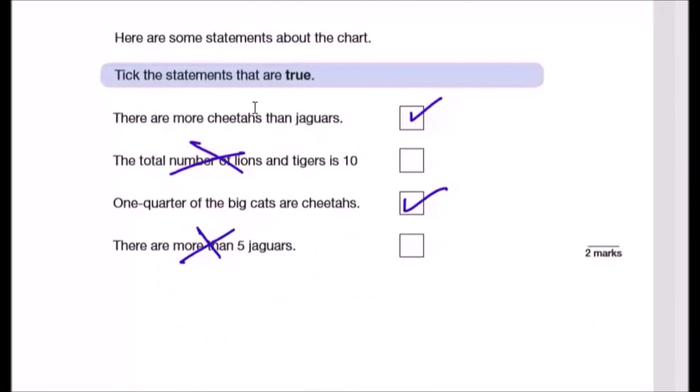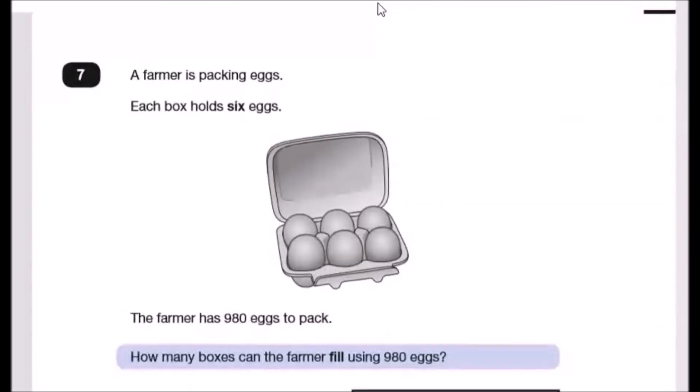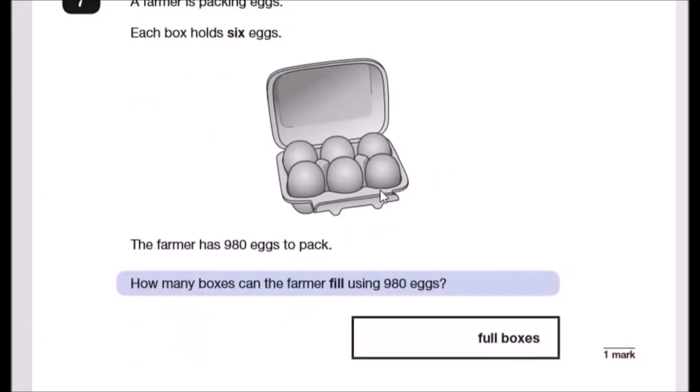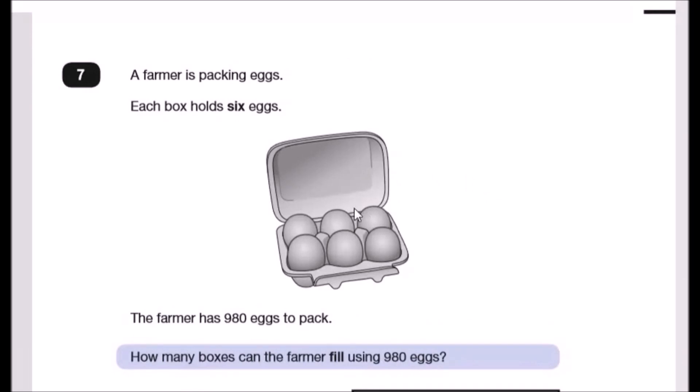Let's move on to seven. Farmer's packing eggs. Each box holds six eggs. The farmer has 980 eggs. How many boxes can the farmer fill using 980 eggs? So if one box has six eggs, how many boxes can you fill? Well, we just do six into 980. Now you could do short division or long division. I'm just gonna do short because it's faster.